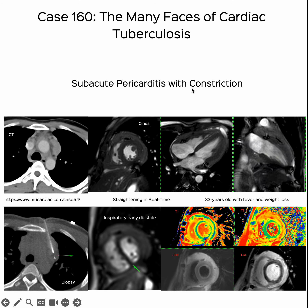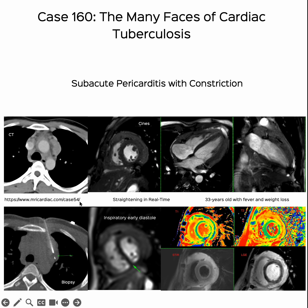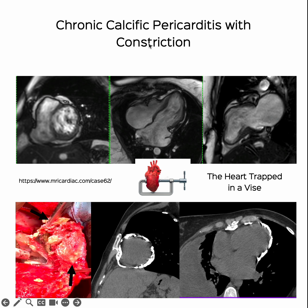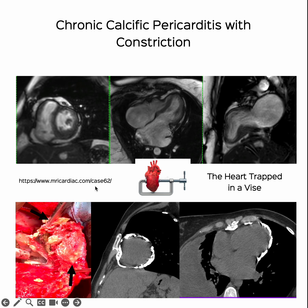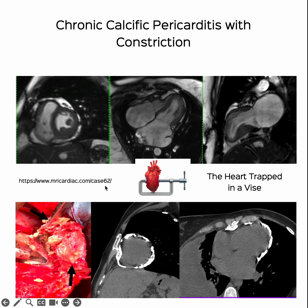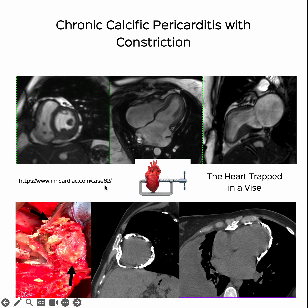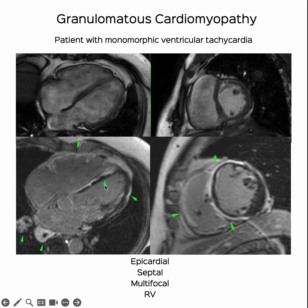This is subacute pericarditis with constriction, discussed as case 54 in the past. Chronic calcific pericarditis with constriction, discussed as case 62.